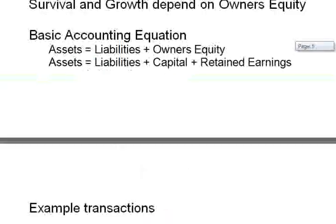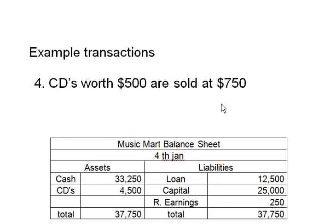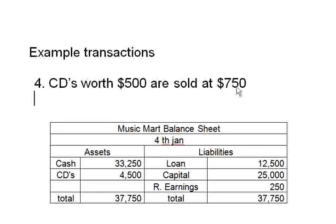Transaction four: CDs worth 500 are sold at 750. So now we are in business and making a profit. The worth of the CDs is 500, whereas what we sold them for is a higher value, so we made a profit of 250 dollars. How do you record this transaction in your balance sheet? You can pause the video and think about it.